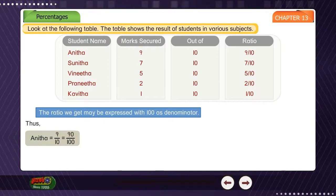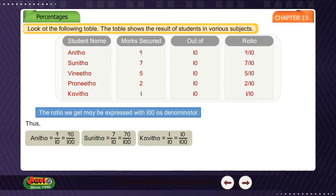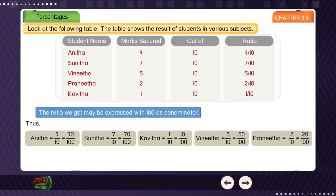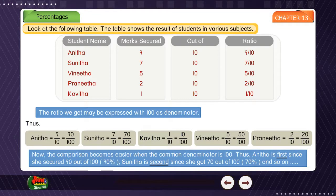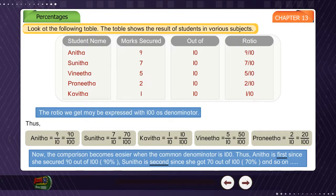Thus, Anitha: 9/10 = 90/100. Sunitha: 7/10 = 70/100. Kavitha: 1/10 = 10/100. Vinitha: 5/10 = 50/100. Pranitha: 2/10 = 20/100. The comparison becomes easier when the common denominator is 100. Thus, Anitha is first since she secured 90 out of 100 — 90%. Sunitha is second since she got 70 out of 100 — 70%, and so on.